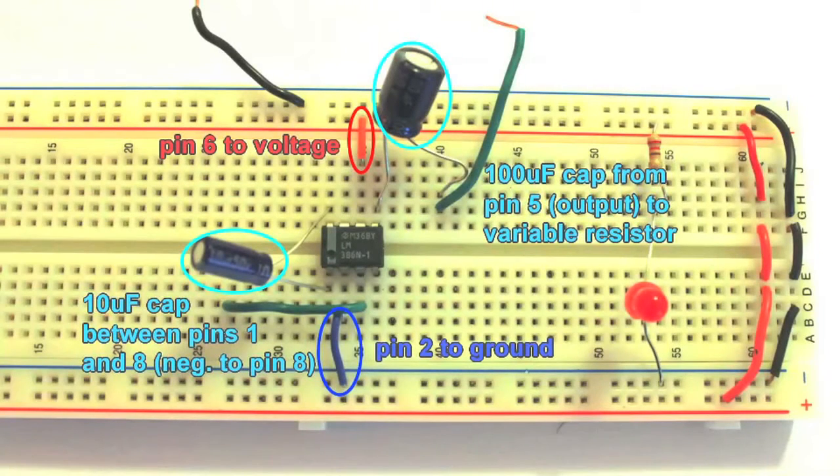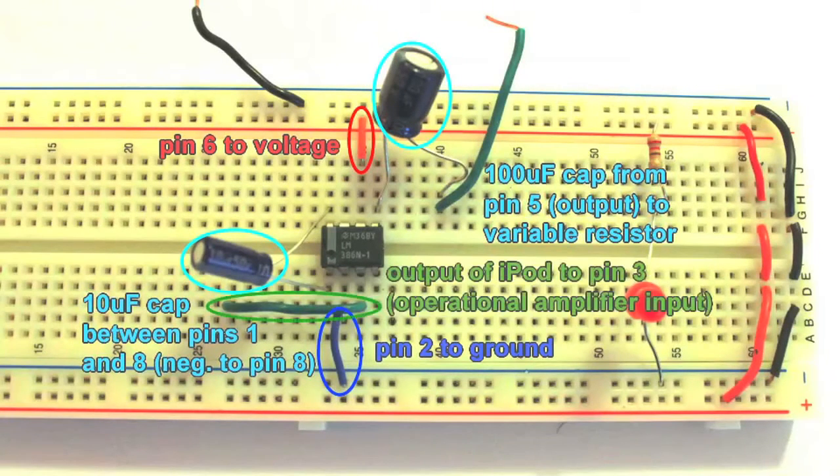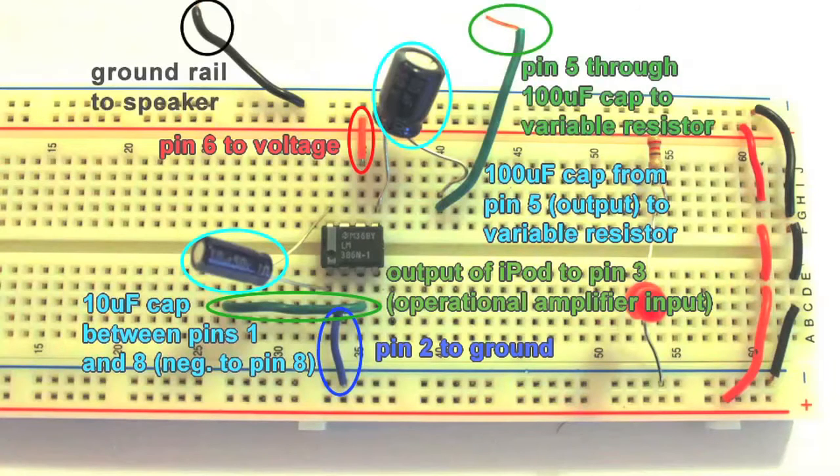We'll eventually connect our signal to the operational amplifier using the green wire that goes to the empty row on the left. The black and green wires that extend out of frame will attach to the speaker terminals. We'll connect these to the speaker in a minute.